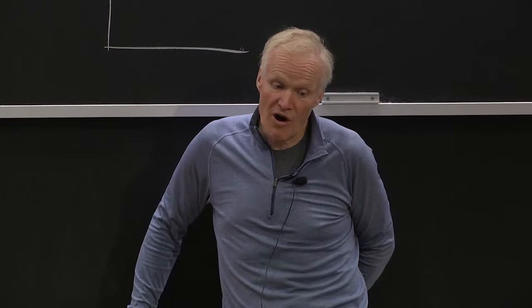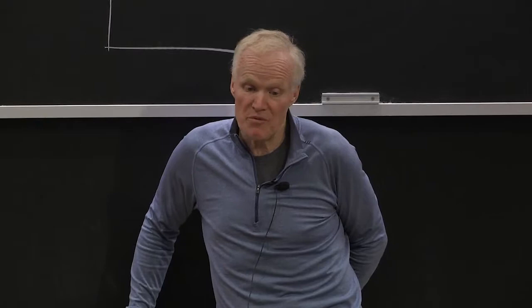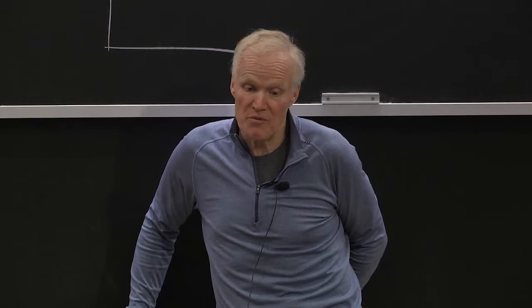But since you can sign the direction of substitution, namely, if W is going up relative to R, you know that he's substituting away from labor, or if R is going up relative to W, you know that he's substituting away from capital. That allows you to sometimes determine the sign of delta V, or at least put bounds on delta V more generally.